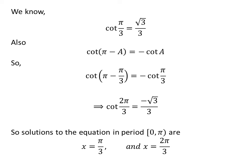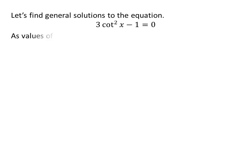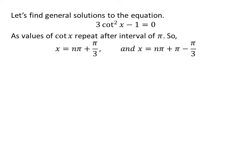So the solutions to the equation cotangent of x is equal to plus and minus square root of 3 upon 3 are pi upon 3 and 2 times pi upon 3 in the period of 0 to pi. Let us now find the general solutions. Since the values of cotangent of x repeat after an interval of pi.